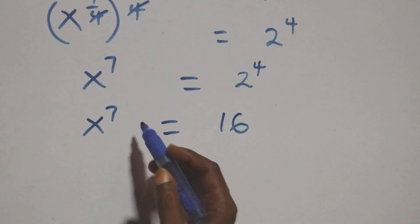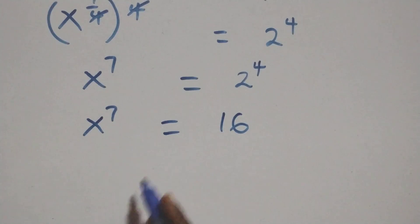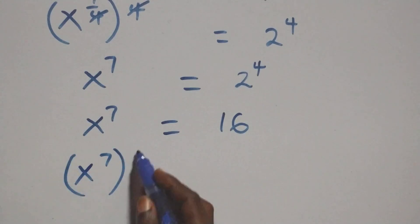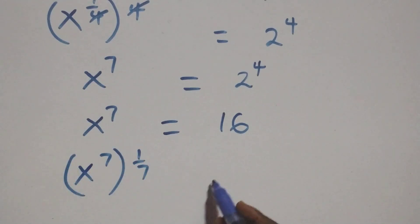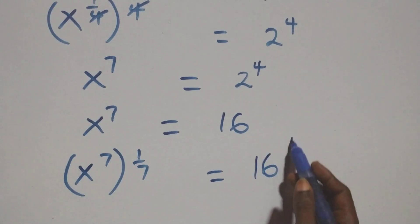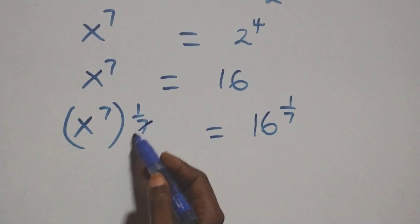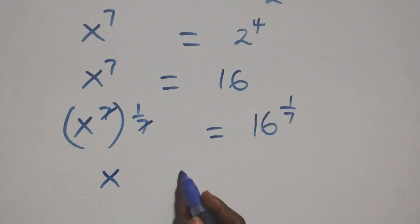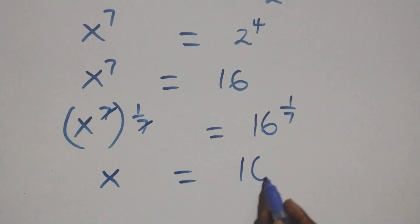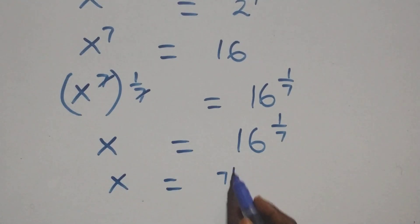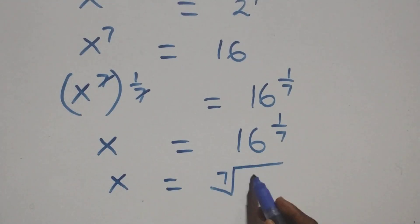To get x raised to power 1 over 7, we raise both sides to power 1 over 7: x raised to power 7, raised to power 1 over 7, equals 16 raised to power 1 over 7. The 7s cancel each other, so x equals 16 raised to power 1 over 7, which can also be written as x equals the 7th root of 16.